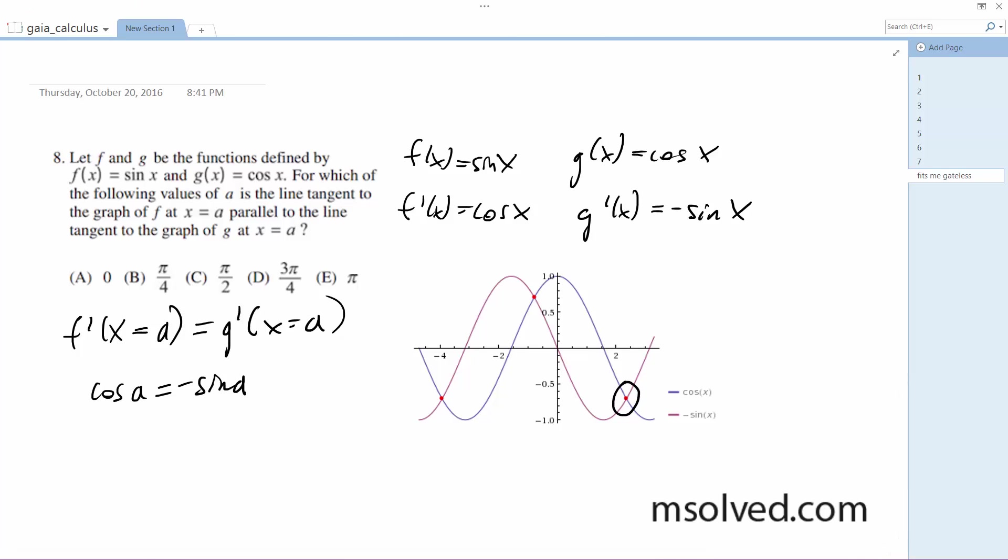That is equal to 3 pi over 4, so it's actually option d.